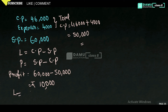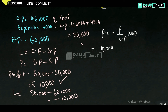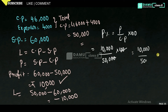Since profit is positive at 10,000 rupees, we find profit percentage. Profit percentage equals profit by cost price into 100, so that is 10,000 by 50,000 into 100. Simplifying: 10,000 by 500 equals 100 by 5, which gives us 20%. So profit percentage is 20%.